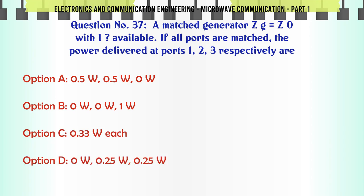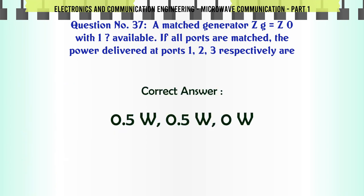A matched generator ZG = Z0 with 1 watt available. If all ports are matched the power delivered at ports 1, 2, 3 respectively are: A. 0.5 watts, 0.5 watts, 0 W, B. 0 W, 0 W, 1 watt, C. 0.33 watts each, D. 0 W, 0.25 watts, 0.25 watts, 0.25 watts. The correct answer is 0.5 watts, 0.5 watts, 0 W.